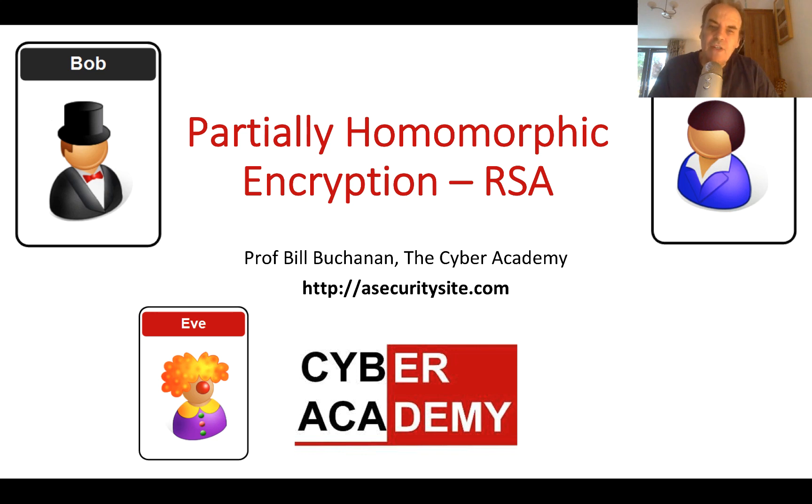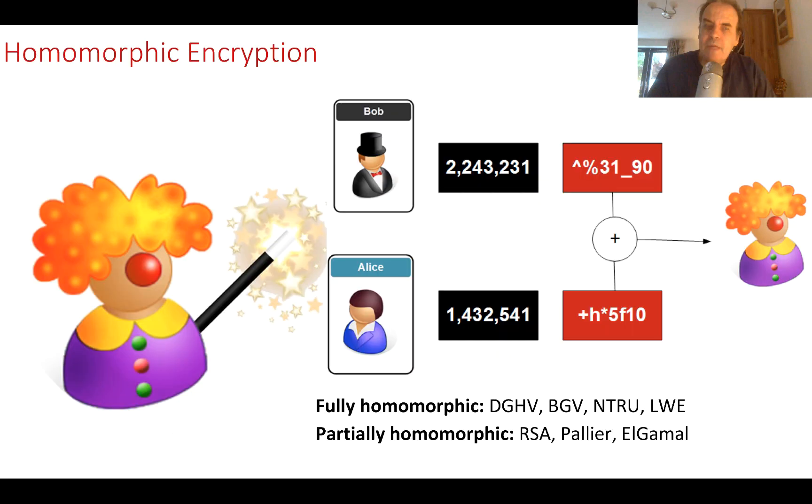Okay, so let's have a look at a partially homomorphic encryption using RSA. Homomorphic encryption is a dream when it comes to privacy, where we could operate on numbers in a ciphered way without actually revealing the values.